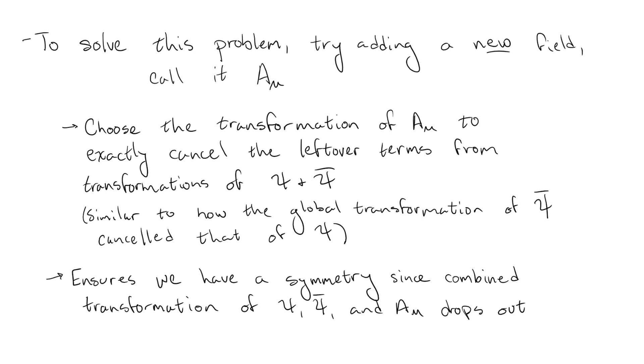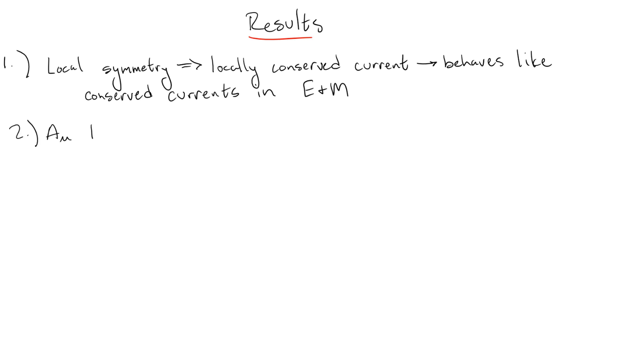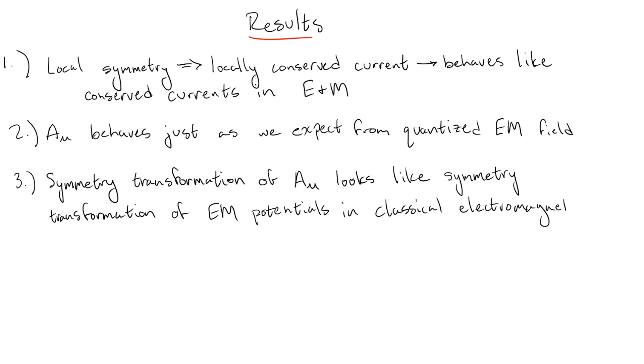When we do this, we end up with a conserved current that looks suspiciously like the conserved current that shows up in classical electromagnetism. But what is this new field that we've added? Well, it just so happens that to transform the way we need, the field must behave exactly like we would expect from a quantized version of the electromagnetic field. In fact, this weird transformation rule is identical to one we see in electromagnetism, known as a gauge transformation.